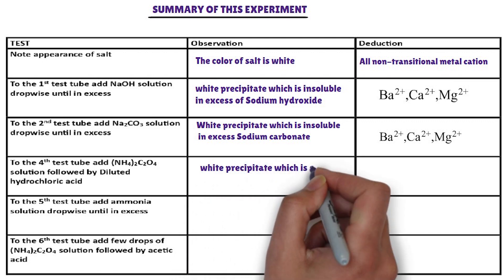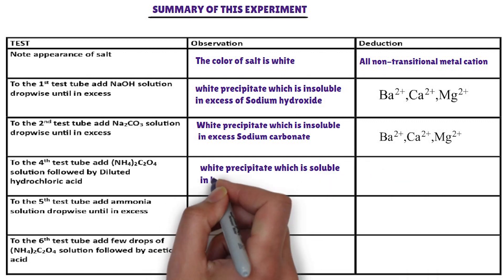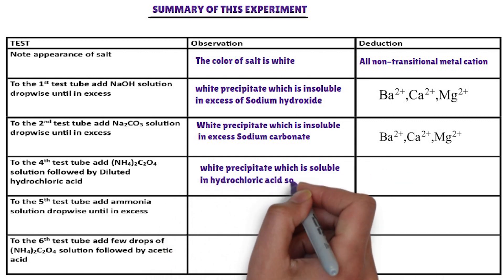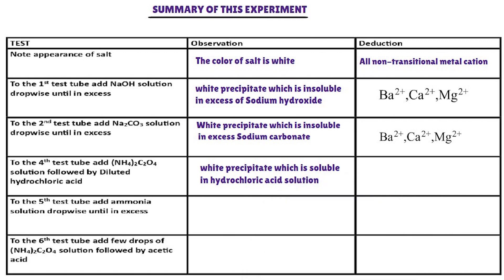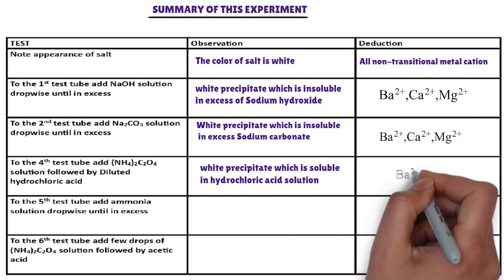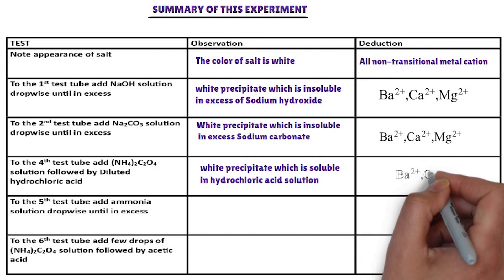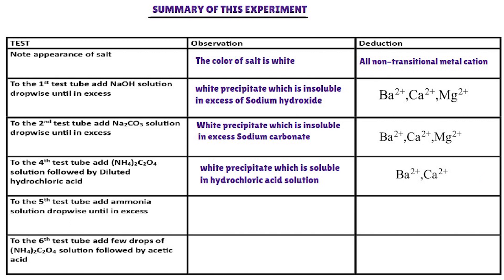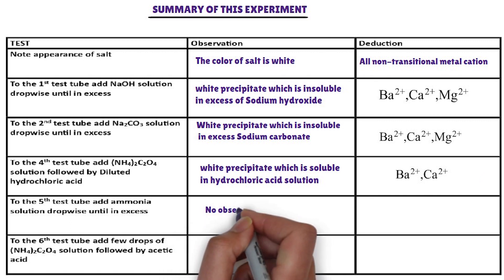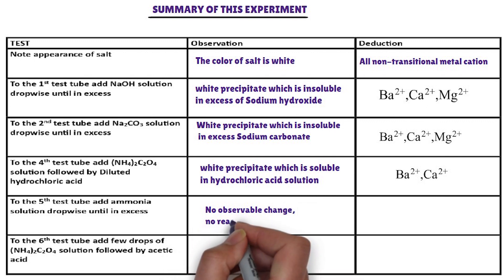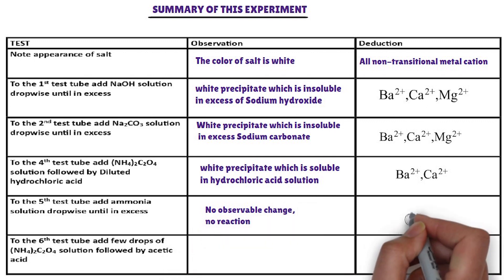The cations from the above list that form a white precipitate with ammonium oxalate solution, and the precipitate is soluble in hydrochloric acid, are calcium ion and barium ion. In the fourth test tube, ammonia solution is added. The cation from the above list that does not react with ammonia solution is calcium ion.